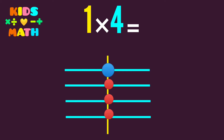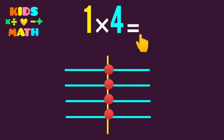We count: 1, 2, 3, 4. So 1 times 4 equals 4.